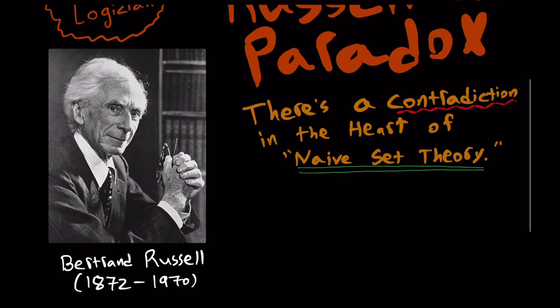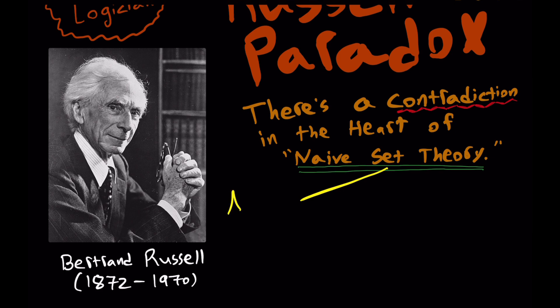On the one hand, with naive set theory, we have the so-called axiom of extensionality. And all that's basically saying is that two sets are equal if they have the same exact members, no more, no less. Pretty straightforward. Common sense, actually. And it's not controversial.